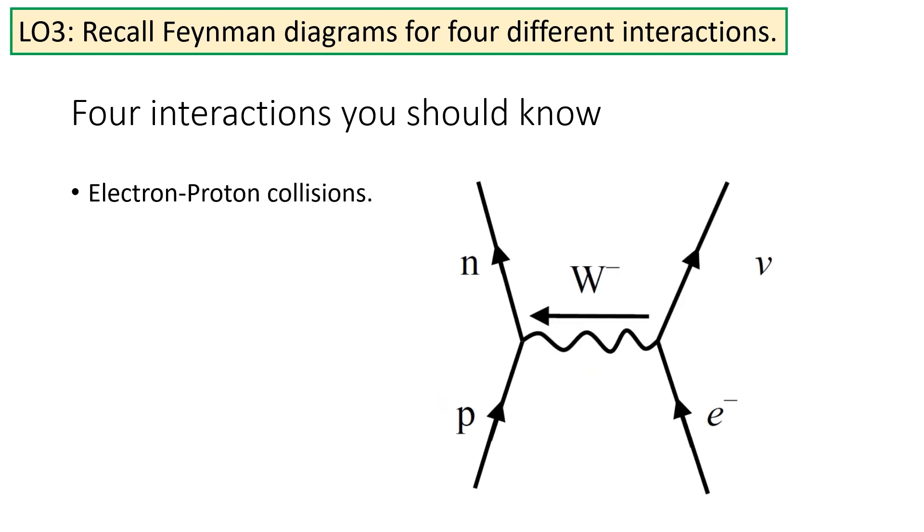This is the opposite of what happens in electron-proton collisions. In the electron-proton collision, we have something very similar. We start again with a proton and electron, but the interaction takes place right to left. And instead of the W-plus boson, we now have a W-minus boson.